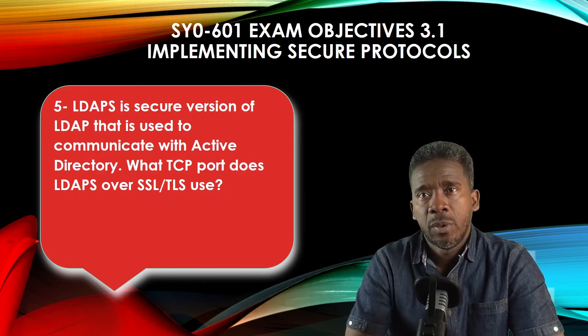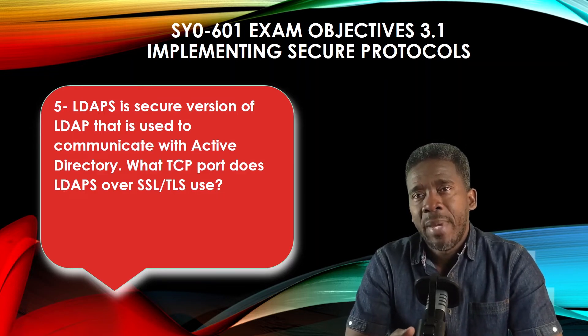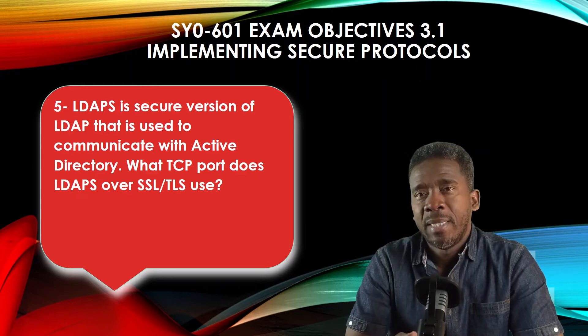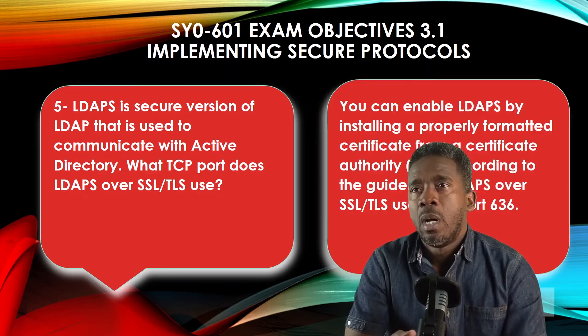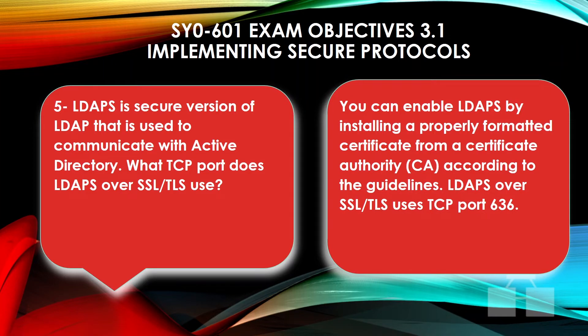Question five: LDAPS is the secure version of LDAP used to communicate with Active Directory. What TCP port does LDAPS over SSL/TLS use? You can enable LDAPS by installing a properly formatted certificate from a Certificate Authority (CA). According to the guidelines, LDAPS over SSL/TLS uses TCP port 636.